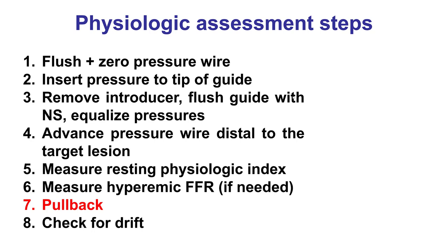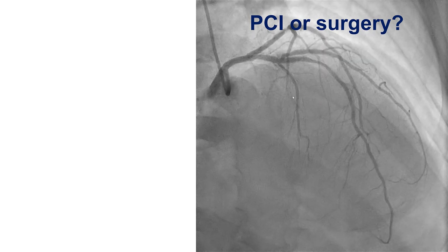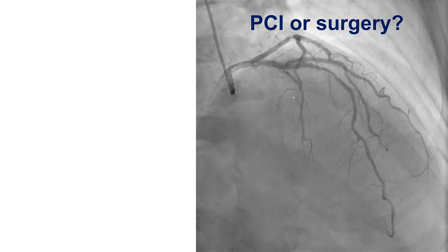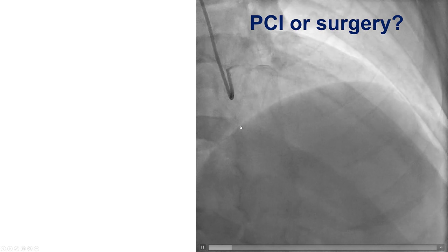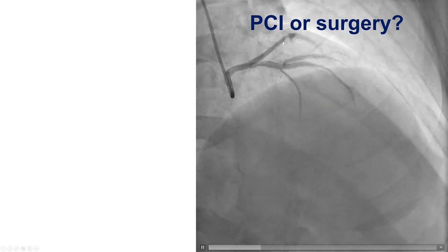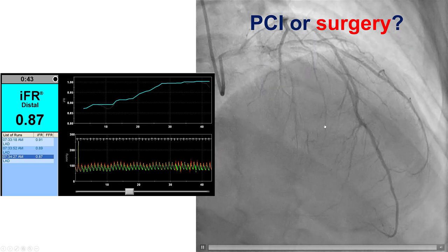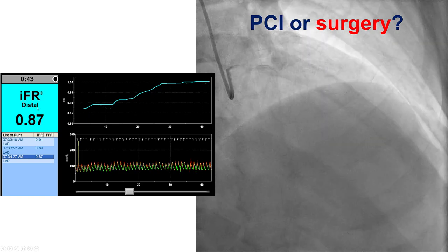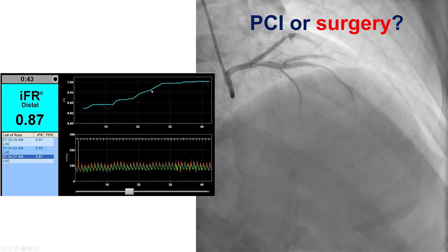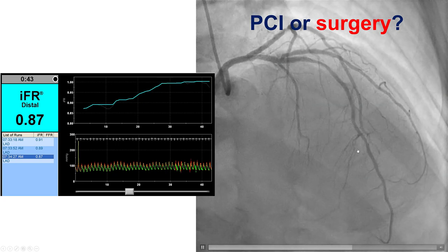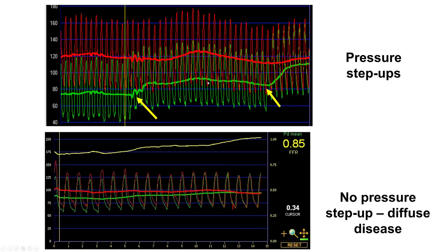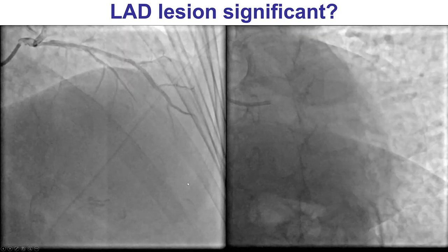After resting and/or hyperemic index measurement, the next step is to perform a pullback, which is critical for localizing areas of pressure drop that potentially require treatment. This is an example of a patient with a significant circumflex lesion. The question is whether there is significant LAD disease as well. An IFR pullback from the LAD demonstrates an ischemic IFR with diffuse step-up, meaning surgery is the preferred treatment and bypass is the preferred modality. Discrete step-ups suggest areas that can be stented; if diffuse with no specific step-up, stenting is unlikely to be successful.